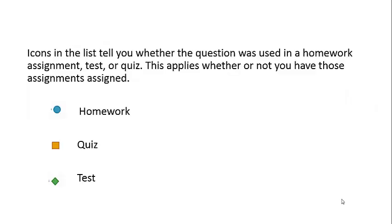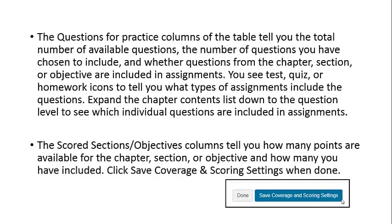Icons in the list tell you whether the question was used in a homework assignment, test, or quiz — this applies whether or not you have those assignments assigned. The Questions for Practice columns of the table tell you the total number of available questions, the number of questions you've chosen to include, and whether questions from the chapter, section, or objective are included in assignments. You will see those icons to tell you what assignments include which questions.